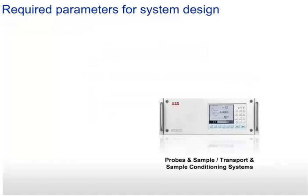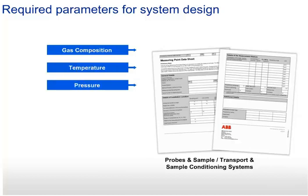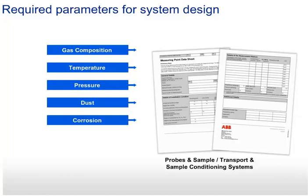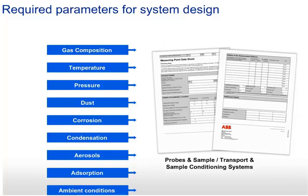Therefore, it is required to have exact information about the process gas composition and the ambient process parameters. A special form called a measuring point data sheet guides customers while filling in all the relevant aspects of their measurement task, like: the gas composition including the measuring component and all participating gases; temperatures of the process gas; dust load and particle size; components in the mixture that can cause corrosion or lead to corrosive condensation and aerosols inside the analyzer sensors; gases that can be absorbed by solid surfaces; and more information about ambient conditions like the classification of hazardous areas.